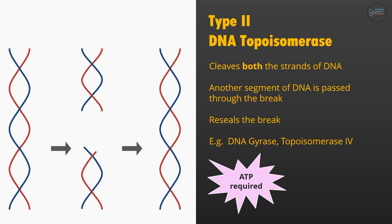To summarize: Type 2 DNA topoisomerase cleaves both strands of DNA, allows another segment of DNA to pass through the break, reseals the break, and requires ATP. The difference from Type 1 is that Type 1 cuts only one strand and does not require ATP, whereas Type 2 cuts both strands and requires energy in the form of ATP to perform its nuclease and ligase activities.